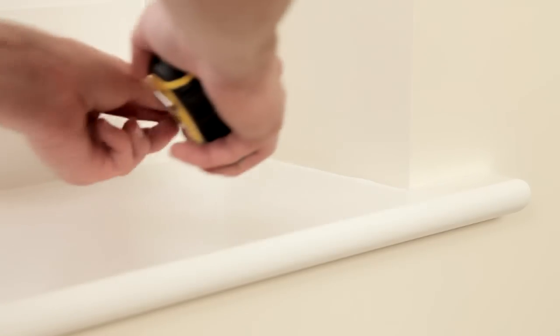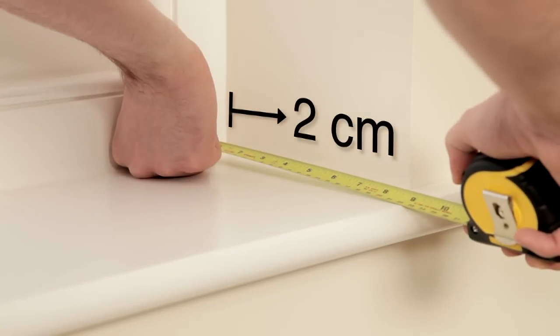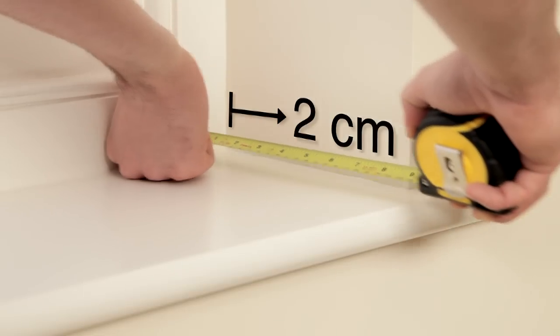Recess blinds do look a bit neater but we suggest you'll need at least two centimeters of space for your vertical blinds to fit comfortably.